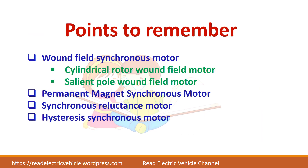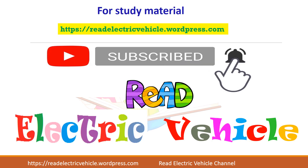To summarize, there are four types of synchronous motor: wound field synchronous motor, permanent magnet synchronous motor, synchronous reluctance motor, and hysteresis synchronous motor. Of these, the cylindrical rotor is widely used for high power applications, the salient pole for low power applications, and in some cases permanent magnet motors are used. If you like the material, do subscribe to the Reed Electric Vehicle channel.